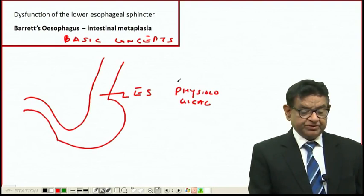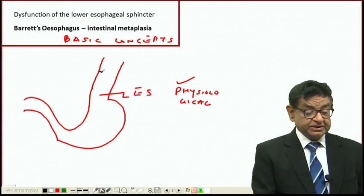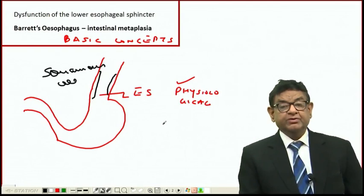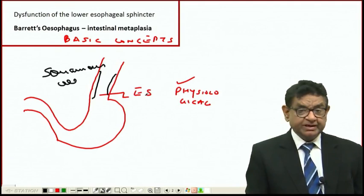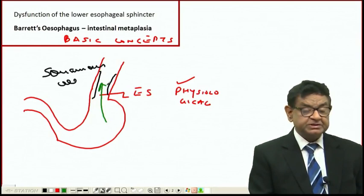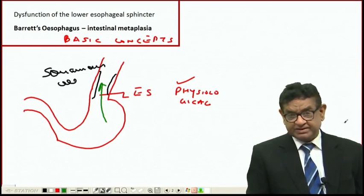The second thing is the lining is squamous cell. When we talk about GERD, there's dysfunction of the lower esophageal sphincter. It remains patent even without swallowing, with the result that acid content of the stomach keeps entering the lower end of the esophagus.